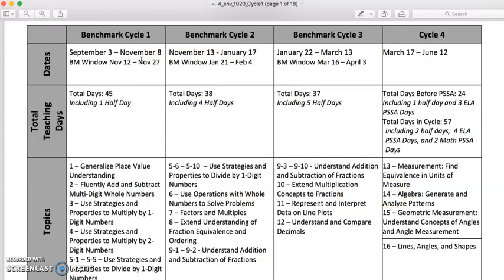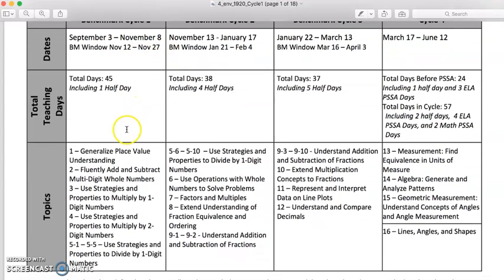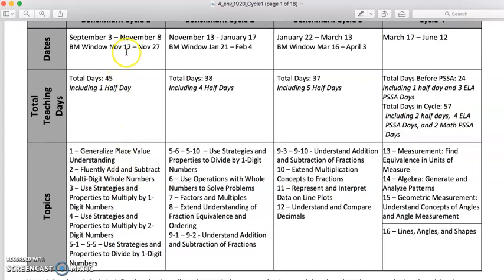Although this is the same as in the past, we hear a lot of questions. Just to explain the way the dates work, we want to make sure that exactly what is on the benchmark, you've had time to teach. So the benchmark cycle is not the same as the term. From September 3rd through November 8th, these are the topics you want to cover. The benchmark window opens that Monday the 12th, so at that point you've had time to teach all of this stuff. The idea is you could give the benchmark that day and then the very next day move on.